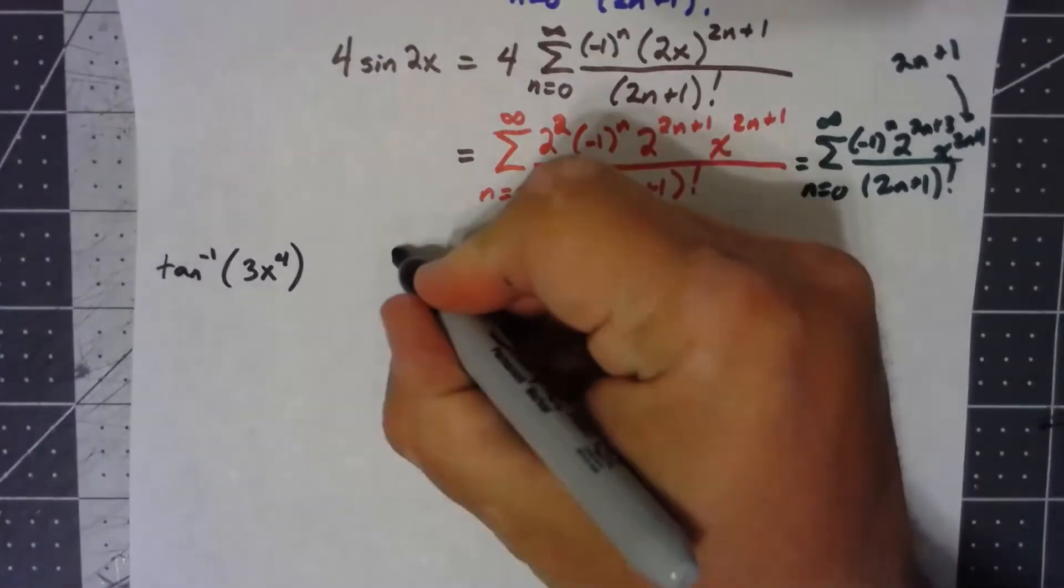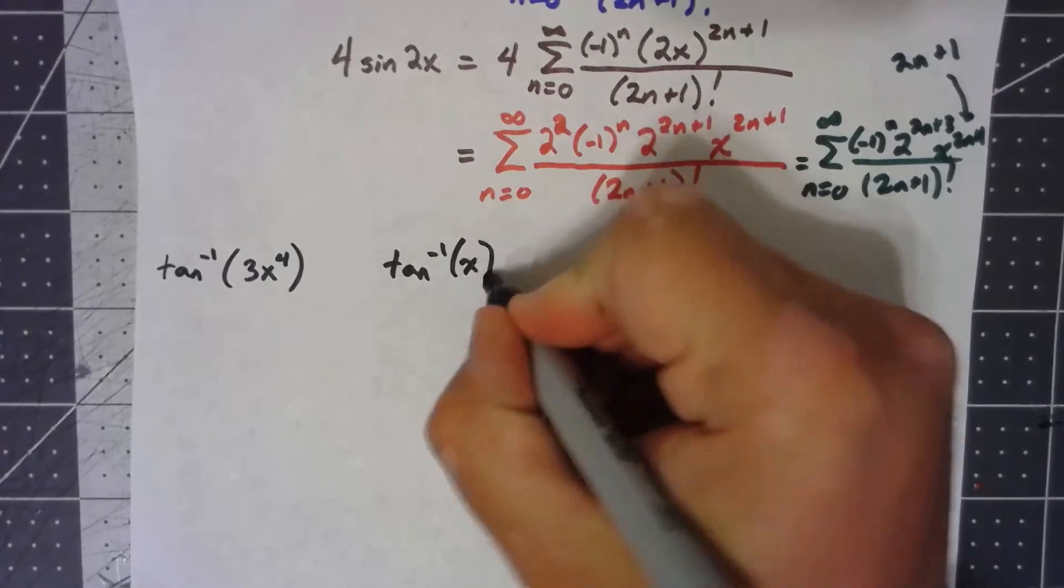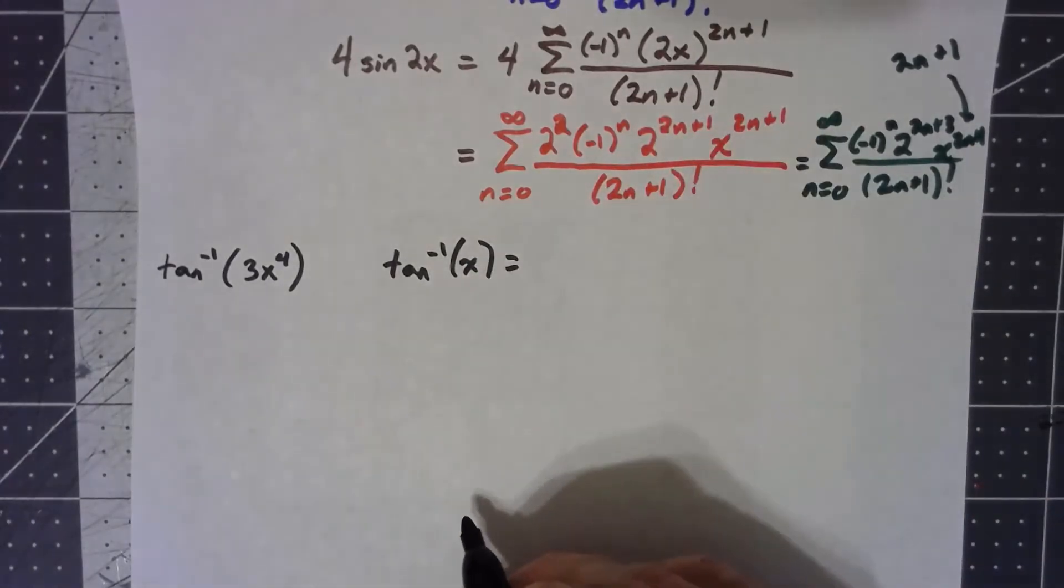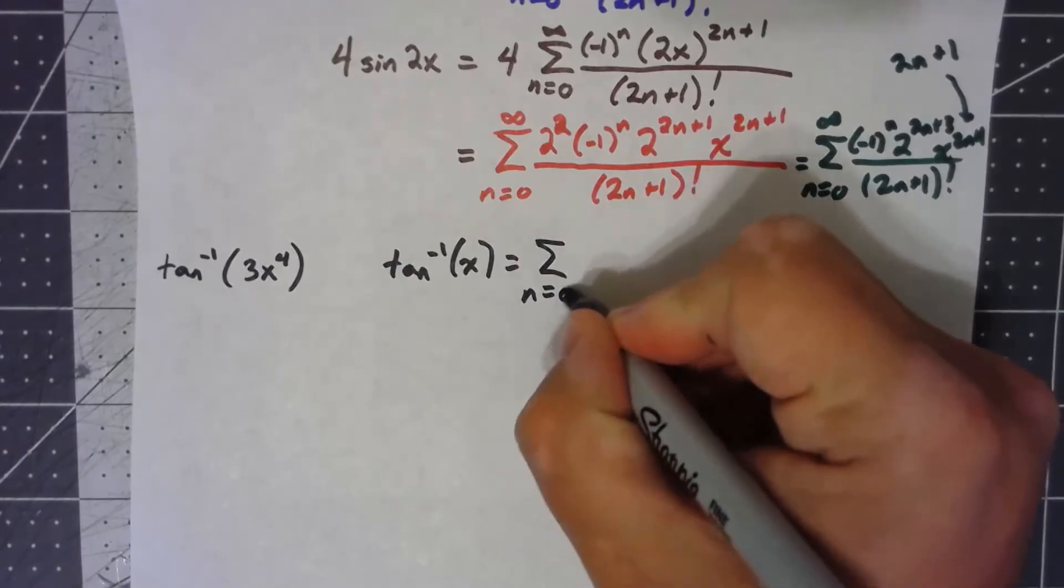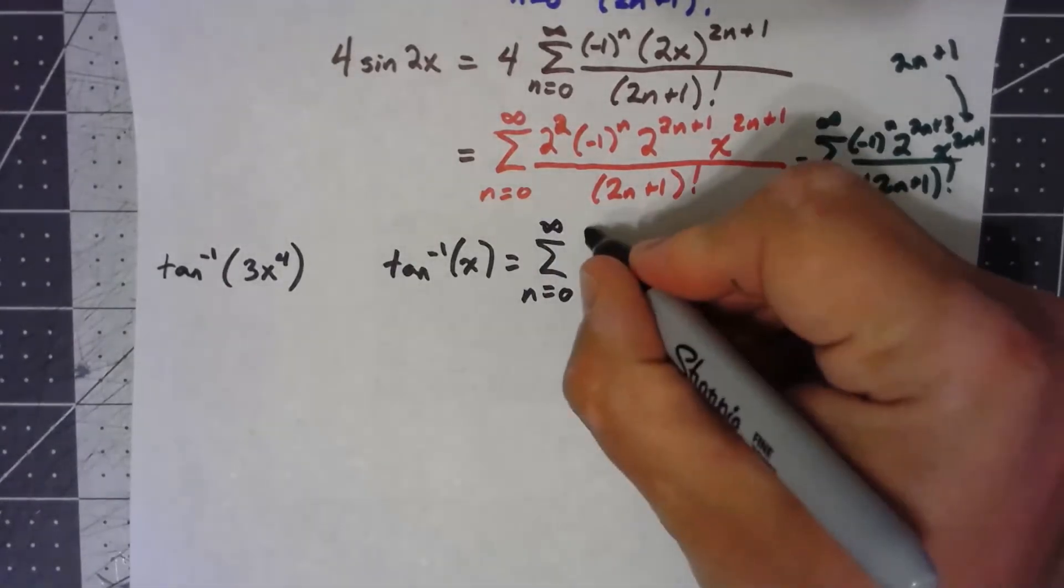The inverse tangent of x is summation from n equals 0 to infinity of negative 1 to the n x to the 2n plus 1